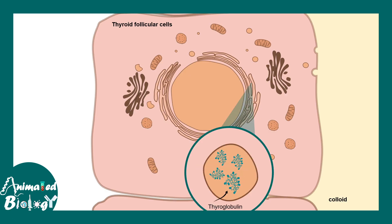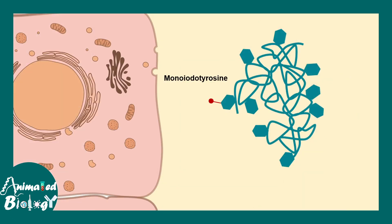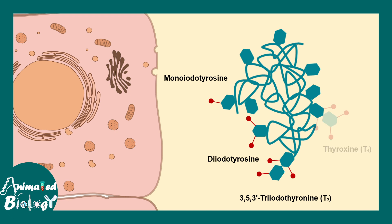Meanwhile, there are specific thyroglobulin proteins which are being synthesized in the ER. Eventually, they move through the Golgi and get secreted into the colloid. This is the substrate for thyroid hormone production. The thyroperoxidase-mediated iodination takes place on this thyroglobulin molecule — there could be monoiodotyrosine, diiodotyrosine, or even combinations creating triiodothyronine (T3) and thyroxine (T4). All this happens inside the thyroid follicle.